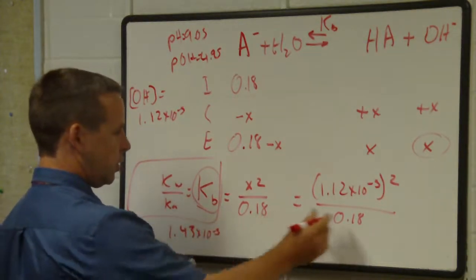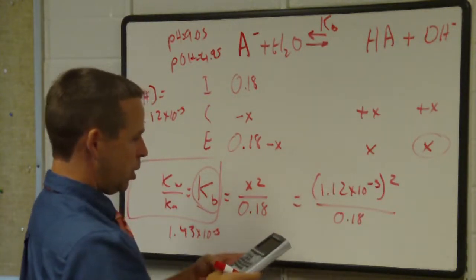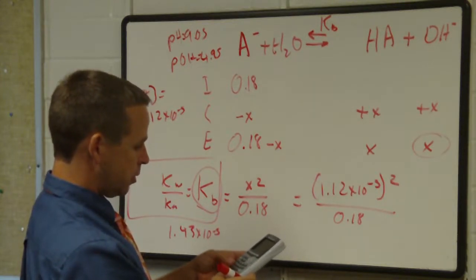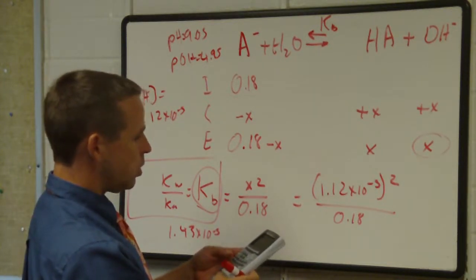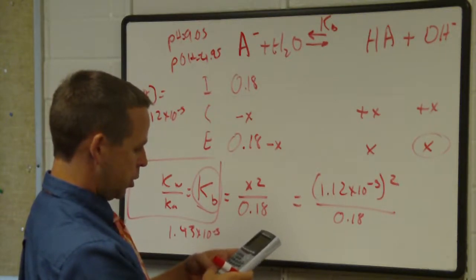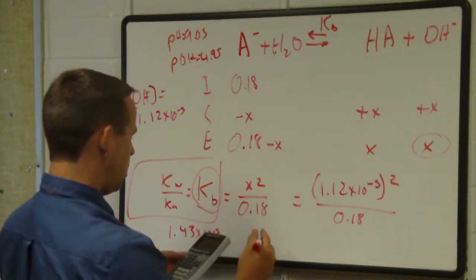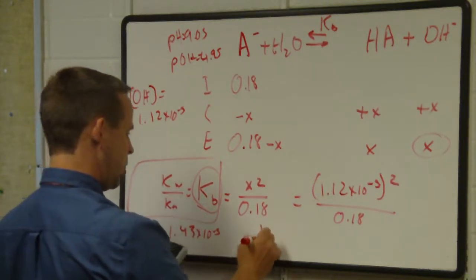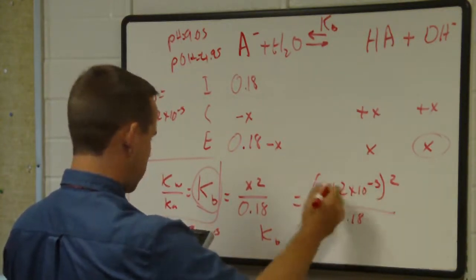For this I'm getting 1.43 times 10 to the minus 5 for the Kb. Let's solve it again: 1.12 times 10 to the minus 5, I square that value, divided by 0.18. Now the Kb I got, so this is the Kb I'm getting when I solve this problem.